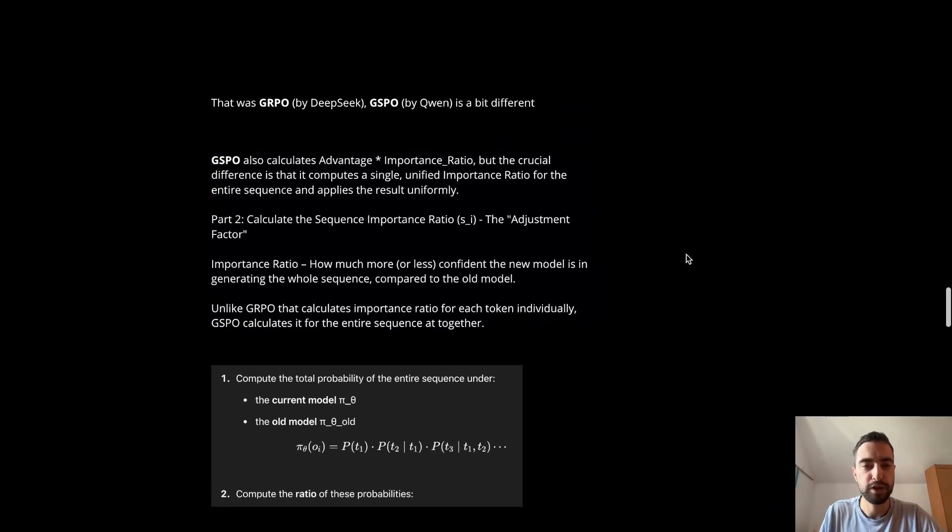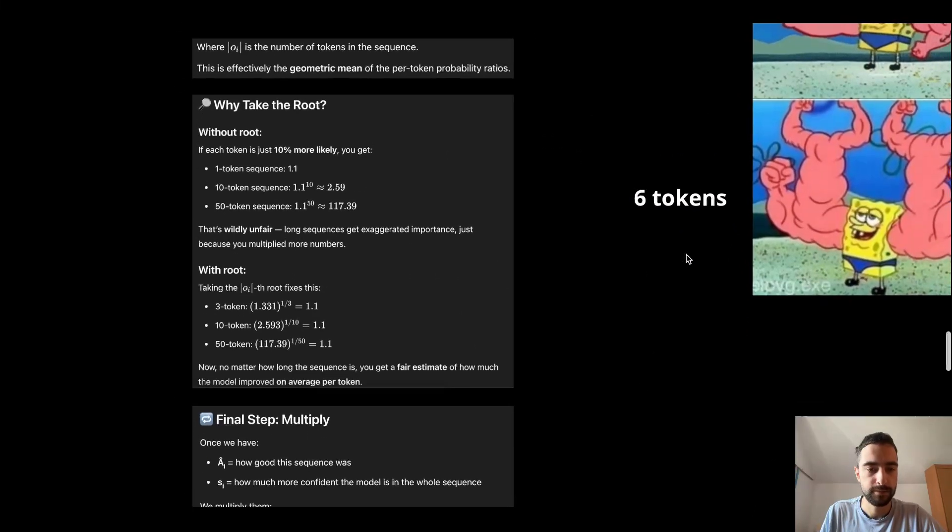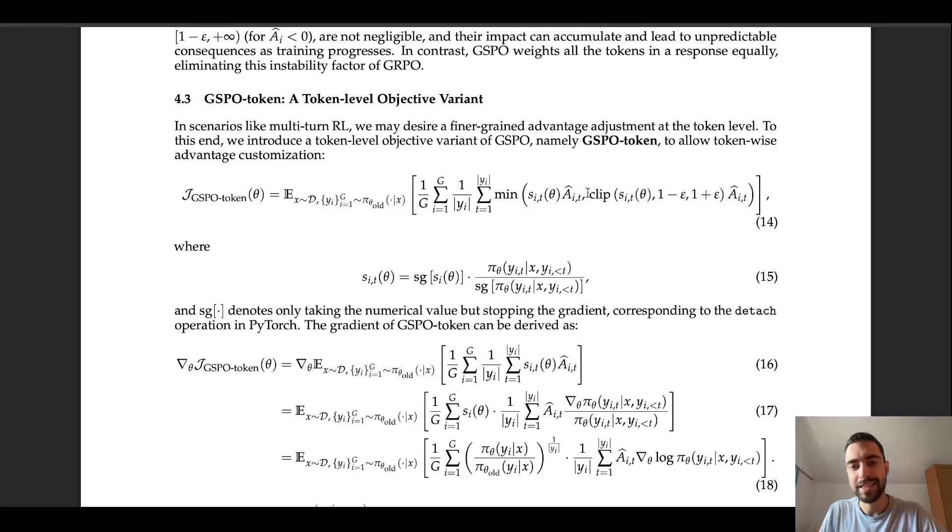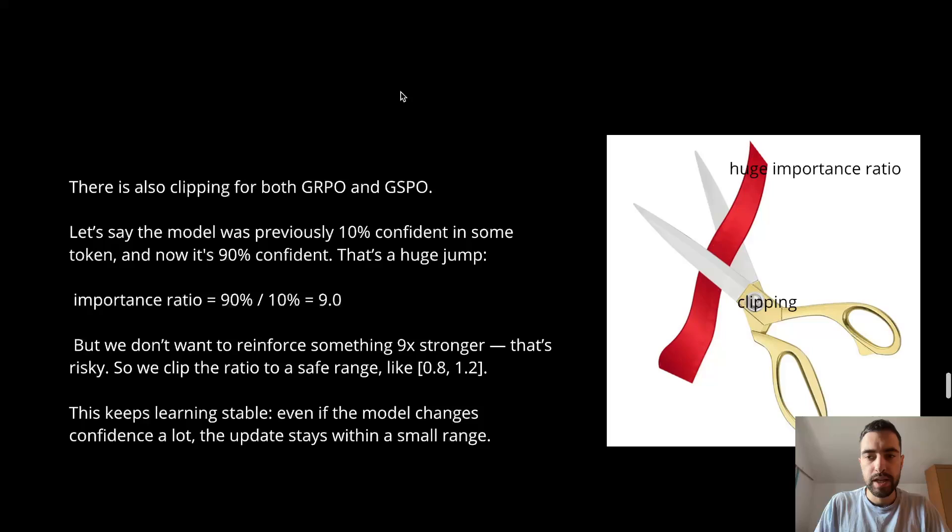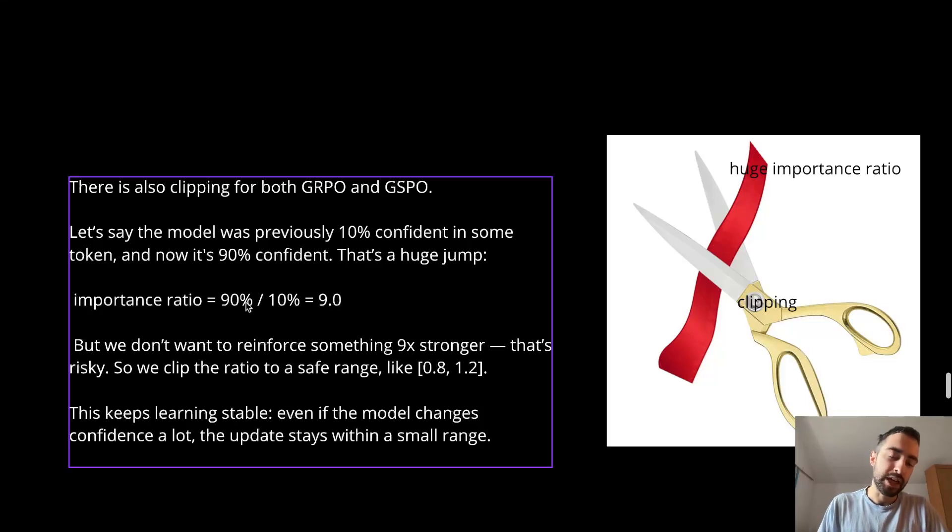I will just show you full text again, so you can check if you want. So lastly, there is this clipping here. So imagine the new model gives 90% chance, and the old model gave just 10% chance. Then the importance ratio will be 9. So we need to make the update 9 times stronger. That is too much, that is too risky. And we also know that these numbers, percentages might not be 100% correct. So we don't want to make such huge changes. So we will just clip this number to some safe range. So if it's lower than 0.8, it will just be 0.8. Or if it's higher than 1.2, it will just become 1.2.